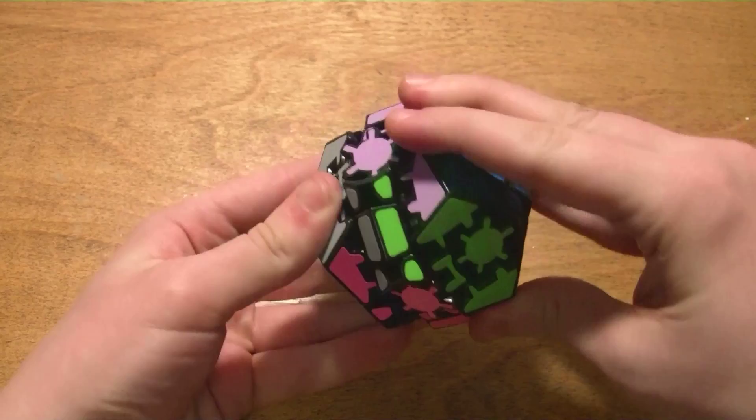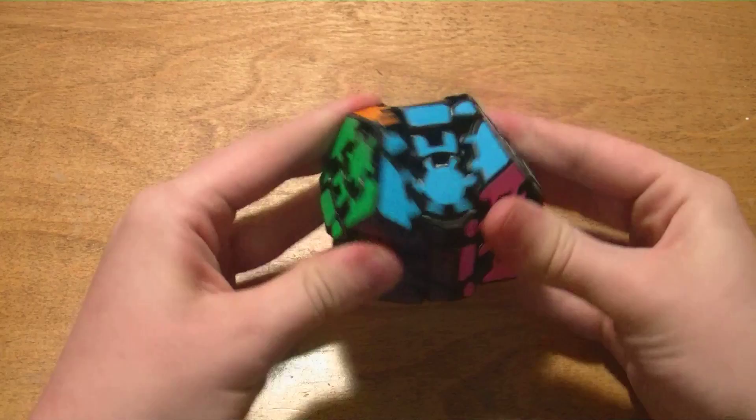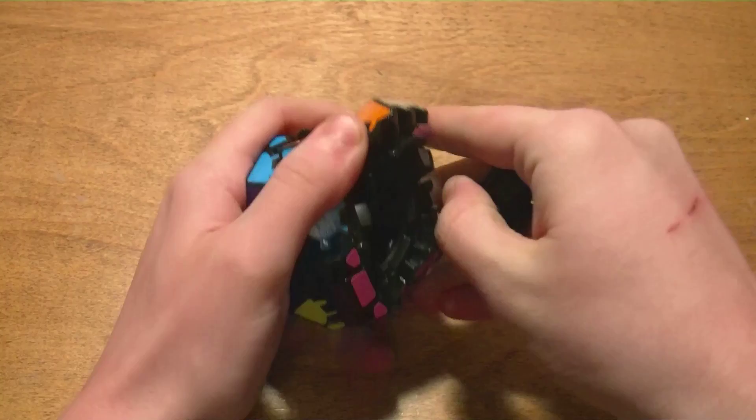As for turning quality out of the box, it's fairly decent. It's a bit rough, but after I show you the mechanism here, I'm going to give it a little bit of lubrication. So yeah, let me show you the mechanism, like rotate one of the layers 45 degrees, just like on any typical three by three, just that can pop out the edge.